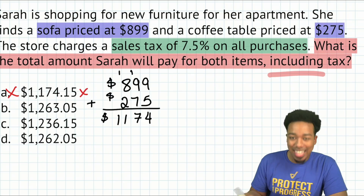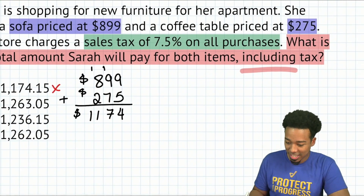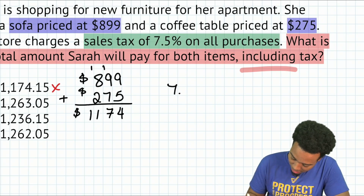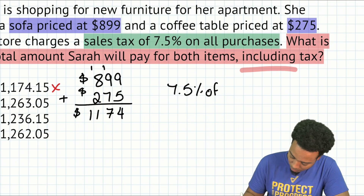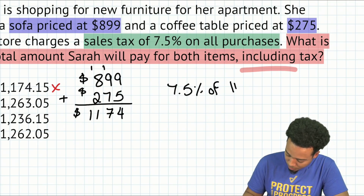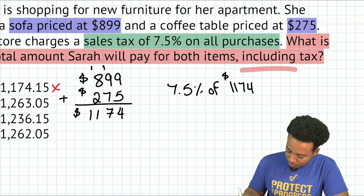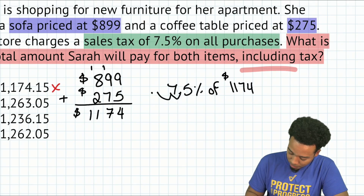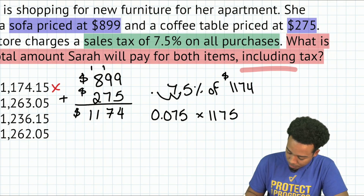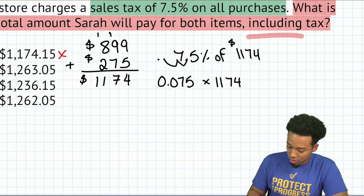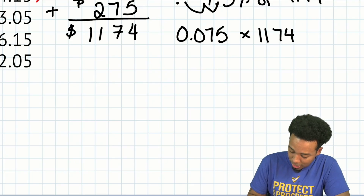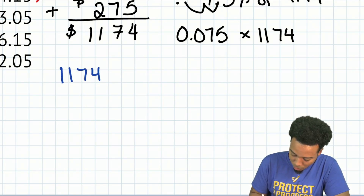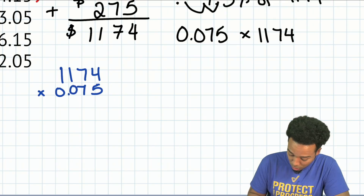Next, we need to figure out what the tax amount is — 7.5% of $1,174. We start by moving the decimal place over twice, giving us 0.075, multiplied by 1,174. Don't make the mistake of using 0.75 — it's 0.075.